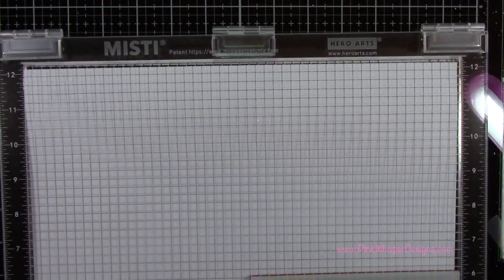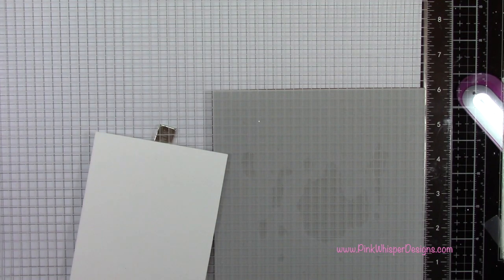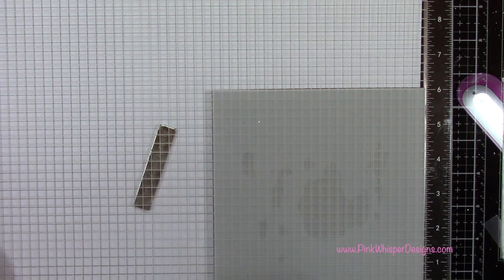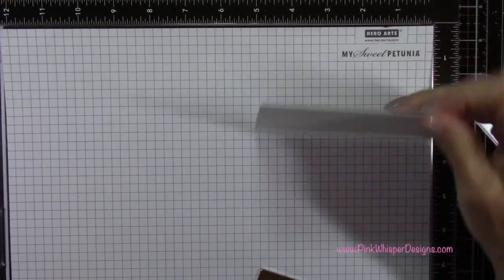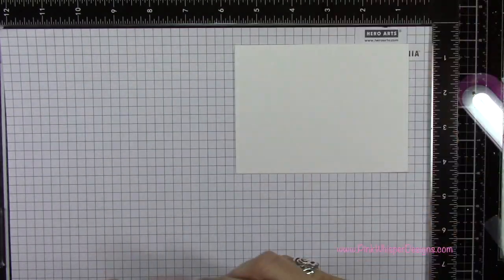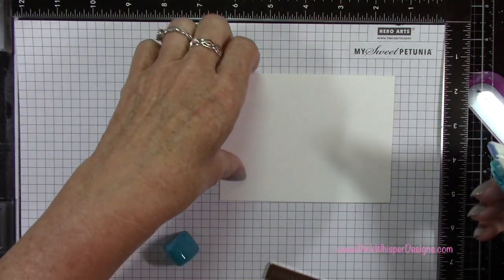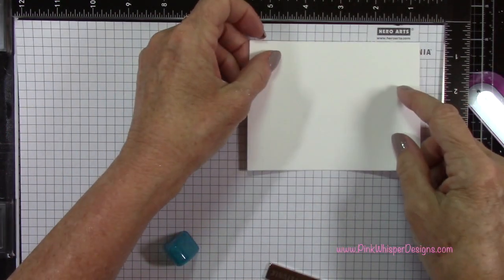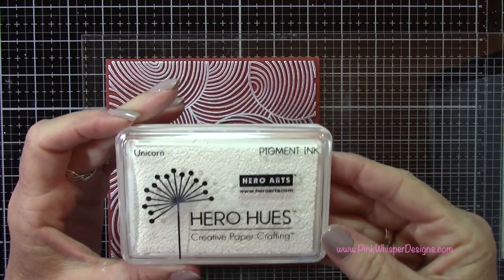I've gone ahead and placed my stamp in my Misti. This is the Hero Arts My Sweet Petunia Memory Misti. So this is a 12 by 12 stamp positioner. It's really great for these large images. So I've gone ahead and I removed that black foam pad because we are using a thick rubber cling stamp. I've placed my paper in the positioner. I'm going to put some anti-static powder down and then I'm just using a little bit of my Tombow tape here just to position that in place while I do my stamping.